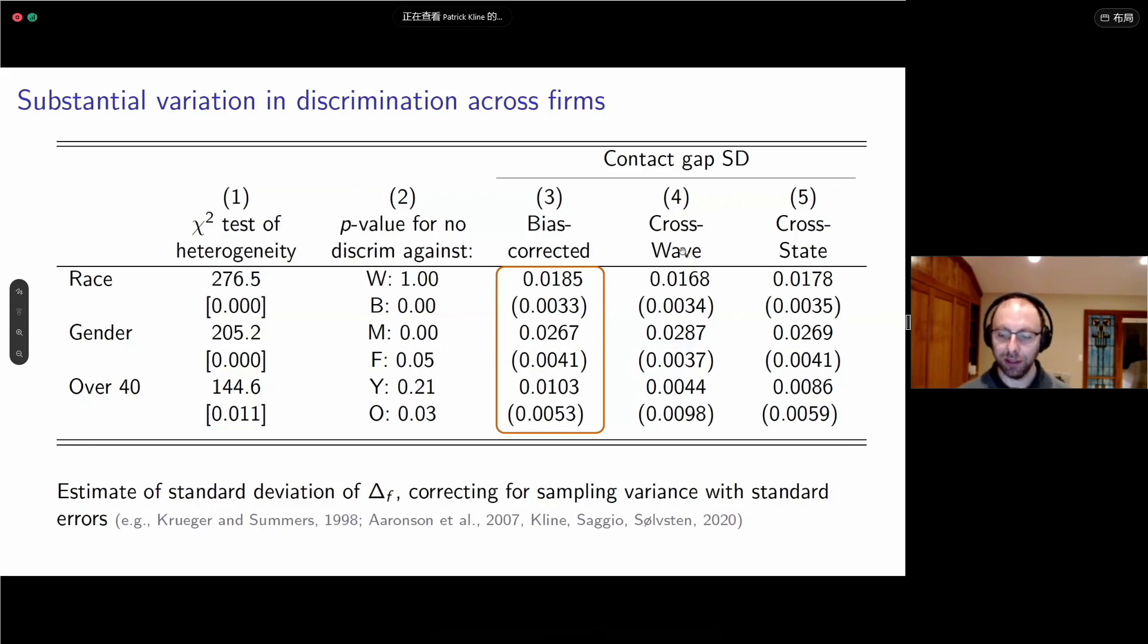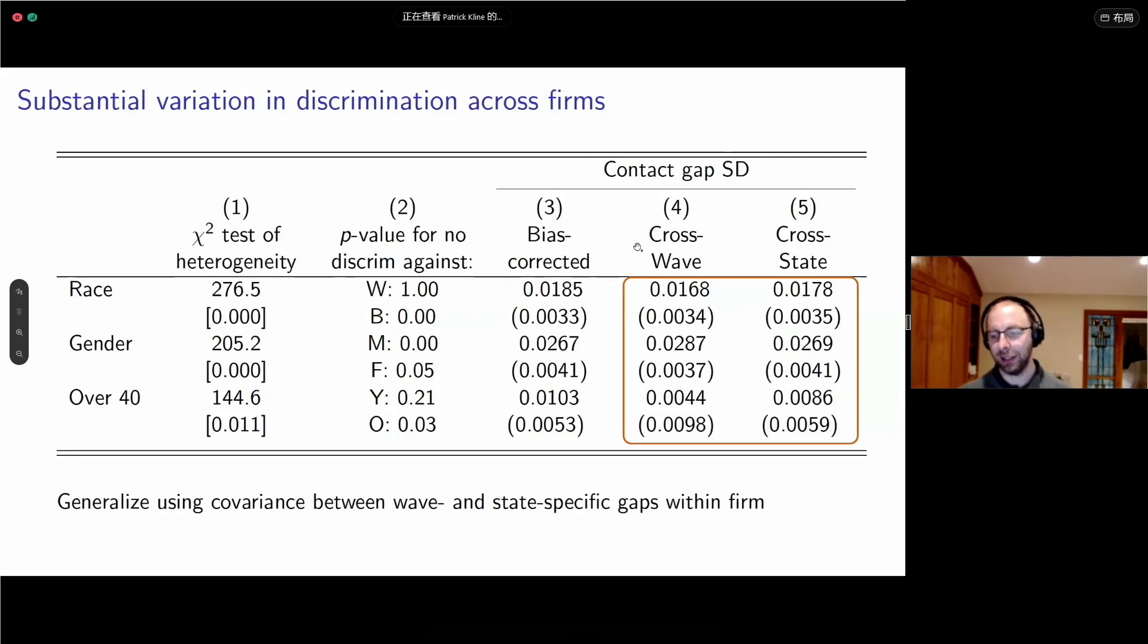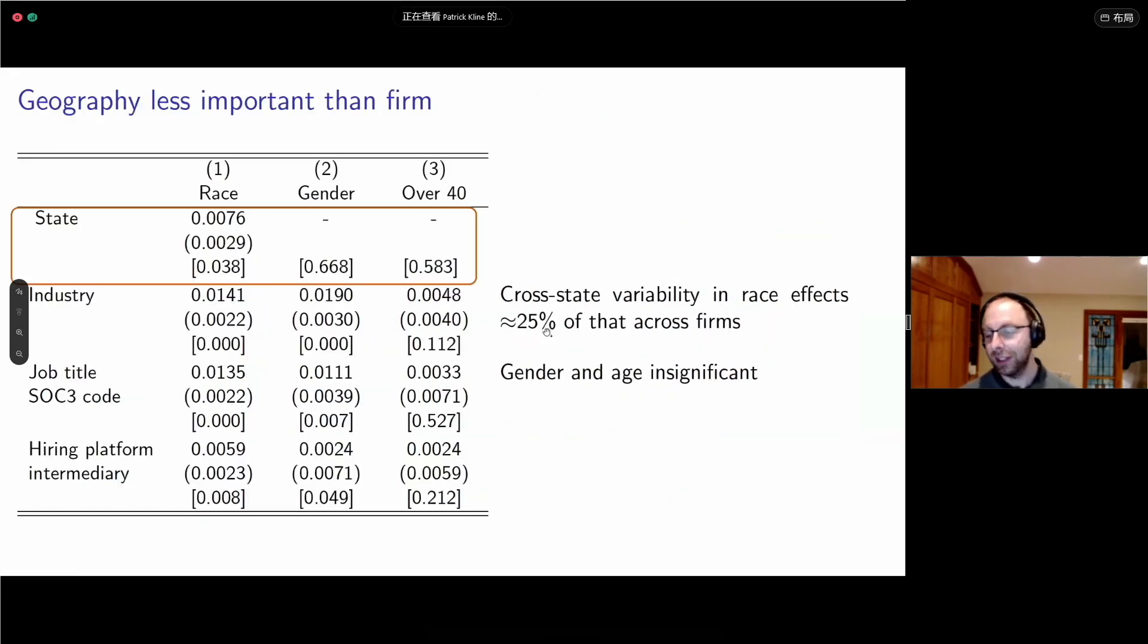You can also ask how stable are these contact gaps. In column four, we've taken this U statistic idea and computed the covariance across waves of the experiment within the firm. You take the average gap in wave one for a given firm and the average gap in wave two and you take the covariance across firms. That's almost the same estimate. That's a sign that we have a very temporally stable variance component. You can do the same thing across geography. Again, you get almost the same numbers. So it's a geographically widespread, geographically stable and temporally stable phenomenon.